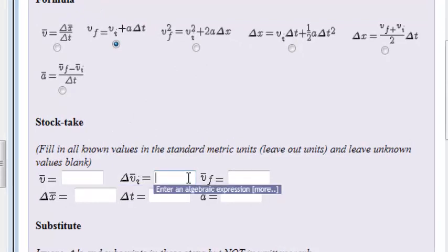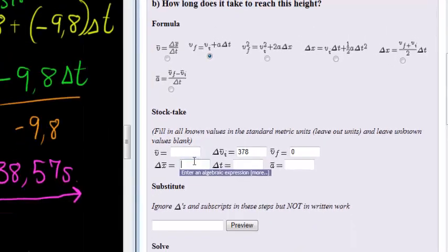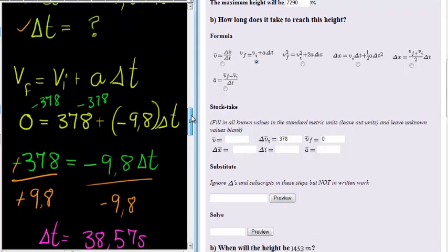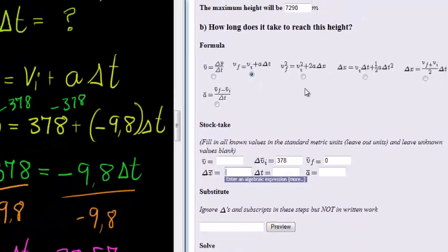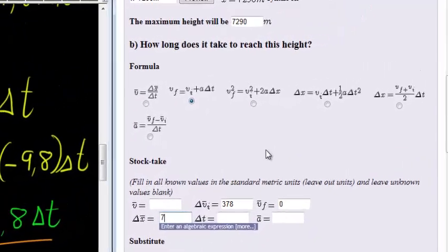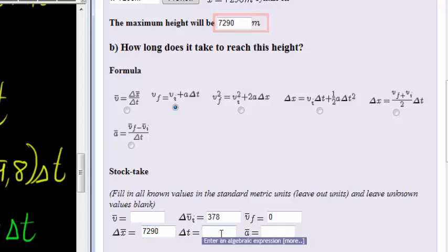And if I had to go and input it in here, I need to place in all my values. I don't know average velocity. I know initial velocity is 378, not zero, 378. Final future velocity, zero. Change in displacement, I did work it out, so I should put it in here. It tells me to fill in all known values.